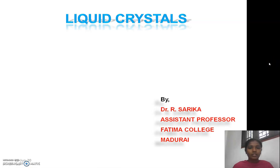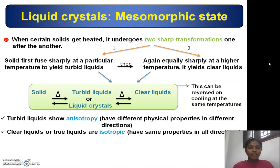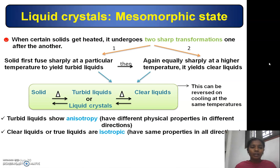Liquid Crystals — Mesomorphic State. When certain solids get heated, they undergo two sharp transformations one after the other. The solid first fuses sharply at a particular temperature to yield turbid liquids. These turbid liquids are liquid crystals.